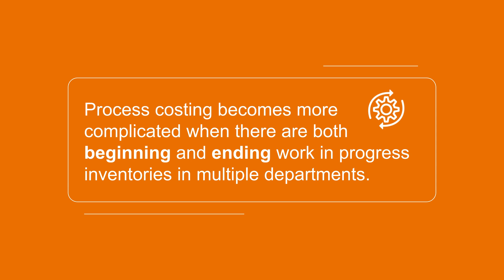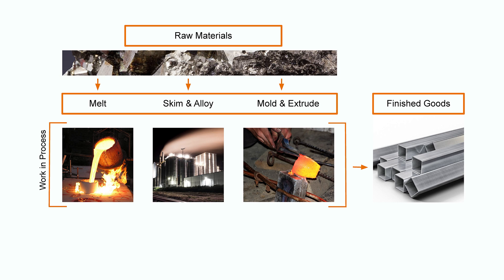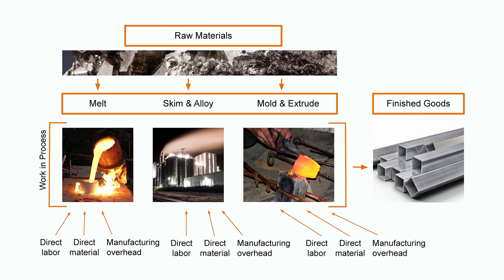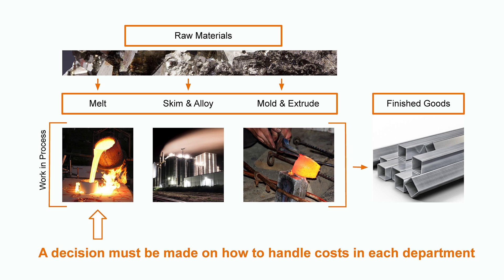Further, you got to do the calculations for all the departments involved. For example, in the graphic illustration you can see that in a steel factory, the raw materials go through different processes like melting, skim and alloying, mold and extrude before becoming the finished goods. Each of the processes has costs attached to it like direct labor, direct material, and manufacturing overhead expenses. Therefore, a decision must be made on how to handle the costs in the melting department, the skim and alloy department, and finally the mold and extrude department before the final product reaches the finished goods to be sold in the market.